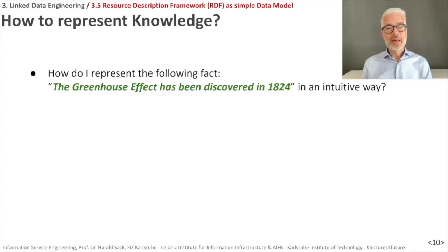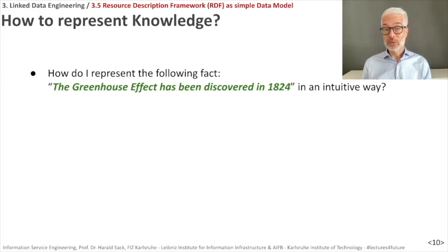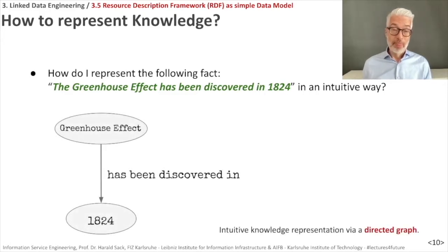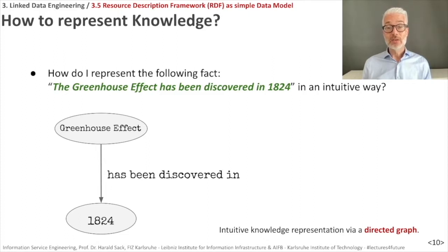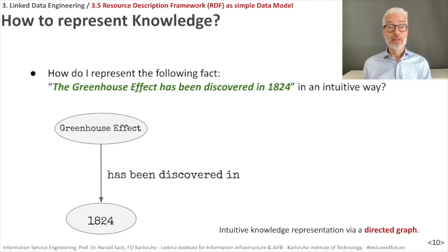We start with a simple challenge: how do I represent the following fact — the greenhouse effect has been discovered in 1824? In an intuitive way, you could do this with a directed graph by simply putting both ends: the subject of the sentence in one node, and the object, which is 1824, in another node. Then in between you have the edge labeled "has been discovered in."